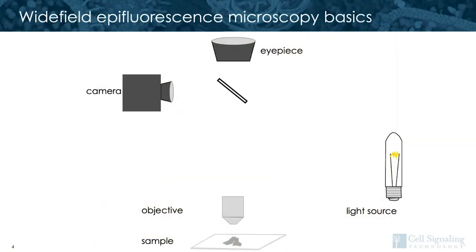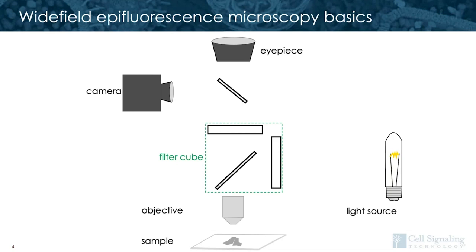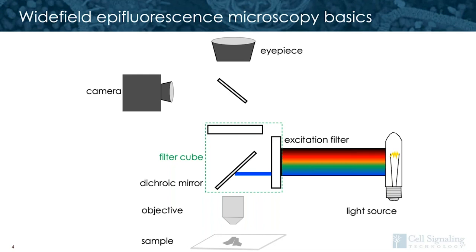Now let's talk about the basics of operating a wide field epifluorescent microscope. You may recall from the previous IF Learning Lab Live that we talked about filter cubes. I want to remind you to learn about the filter cubes on your microscope, because the specs for these are not standard across all microscopes. An epifluorescent microscope relies on a light source which gives light across the spectrum. This light will be gated by an excitation filter to a smaller wavelength, which will excite your sample. Light of a further wavelength in the spectrum is emitted by the fluorophores excited in the sample.